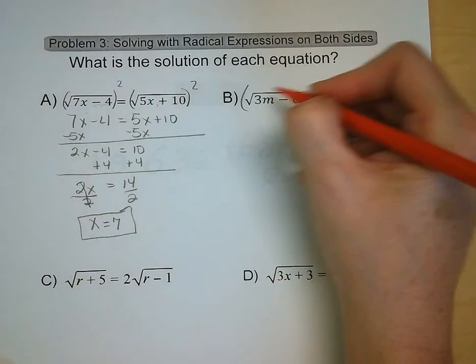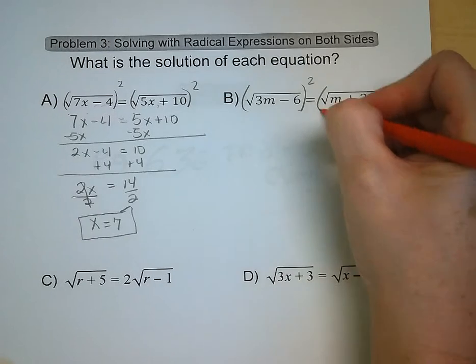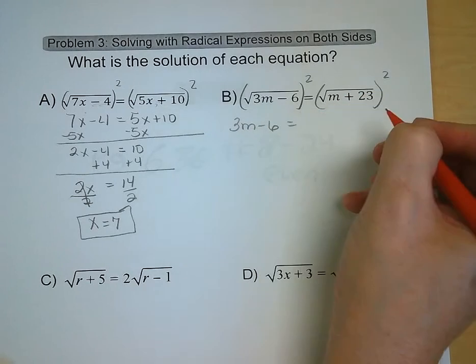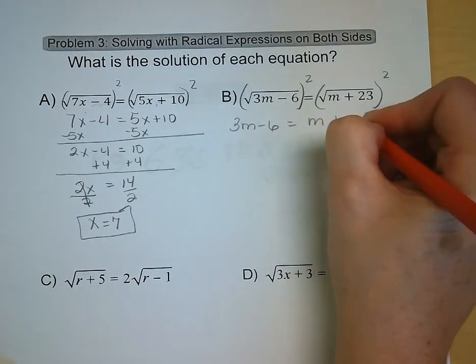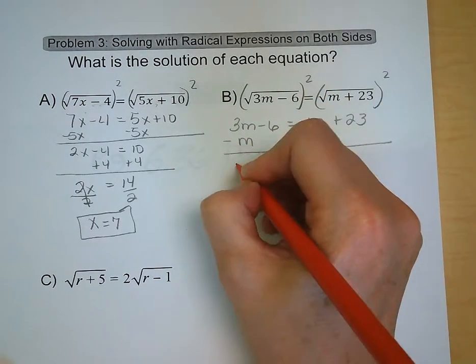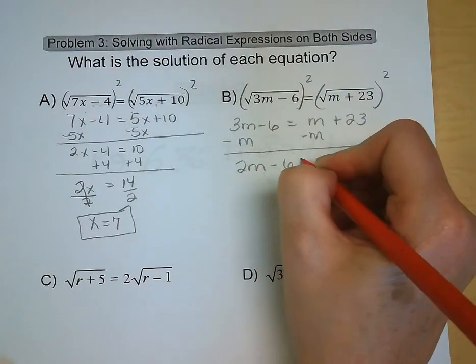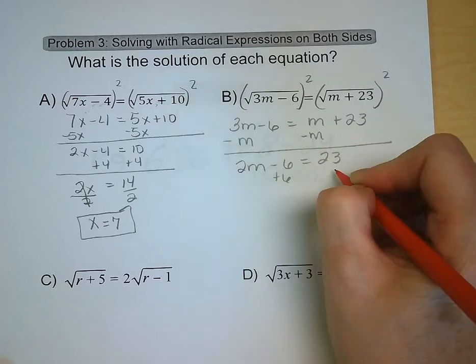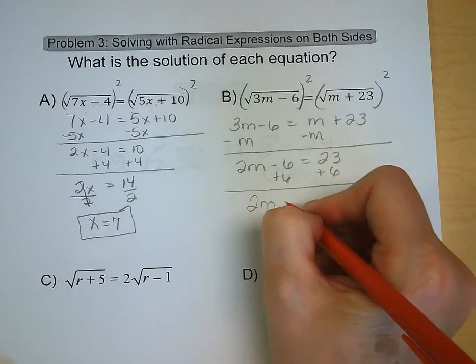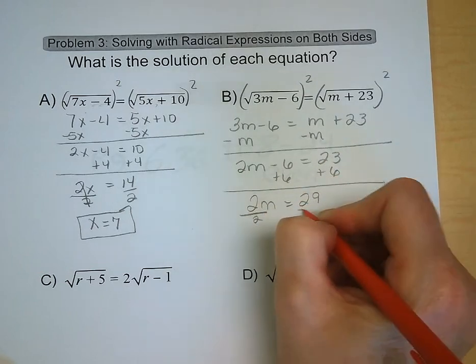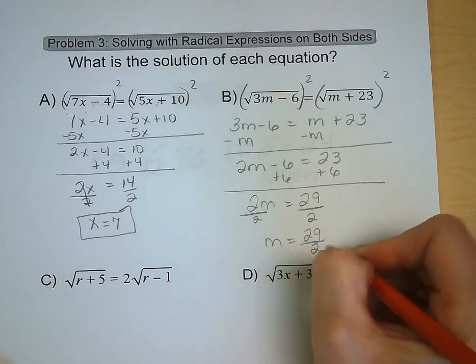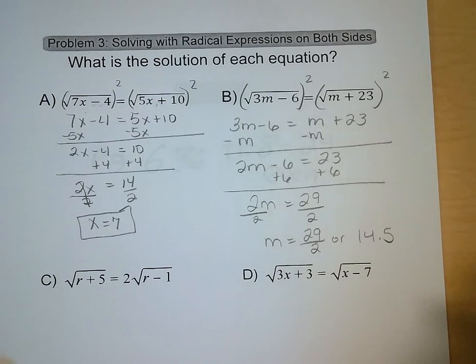Letter B. Start off, square both sides of the equation. We're left with 3m minus 6 is equal to m plus 23. Take away an m from both sides. 2m minus 6 is equal to 23. Add 6 to both sides. 2m equals 29. Divide by 2. m is equal to 14.5, or you could leave it as just 29 halves. We will not be picky.